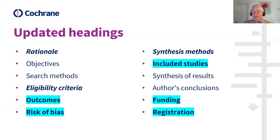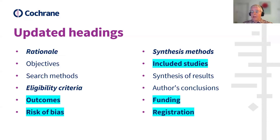In the new format, there are now 12 headings, in line with the format providing more focus. Background has changed to rationale, and objectives and search methods remain the same. Eligibility criteria was previously inclusion criteria — a subtle change. We have new headings for outcomes and risk of bias. Synthesis methods was previously data collection and analysis, and we have new headings for included studies, funding, and registration.